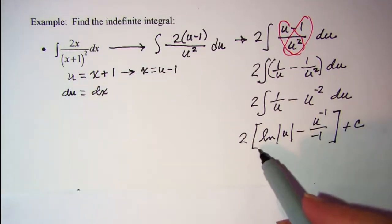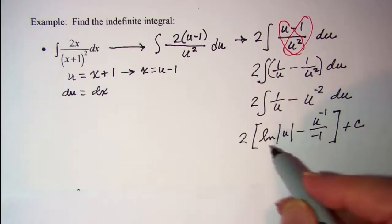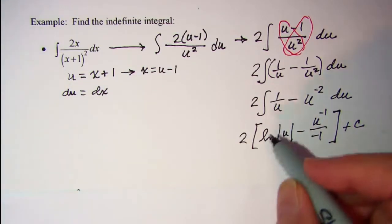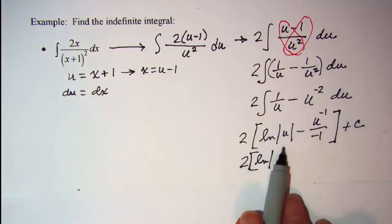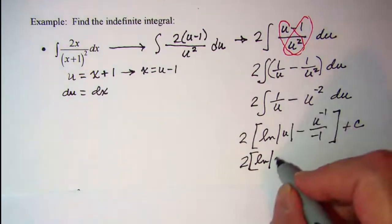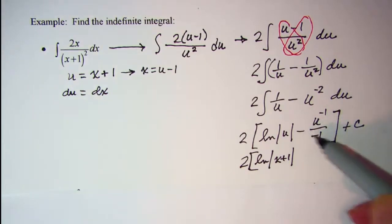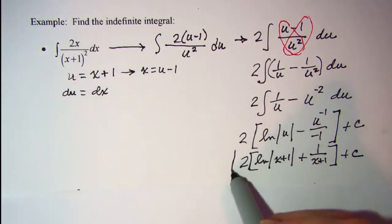So let's sub back in. We have 2 ln of x plus 1. This minus and this minus gives me a plus, and then 1 over x plus 1. So that's my answer. I could also distribute that 2.